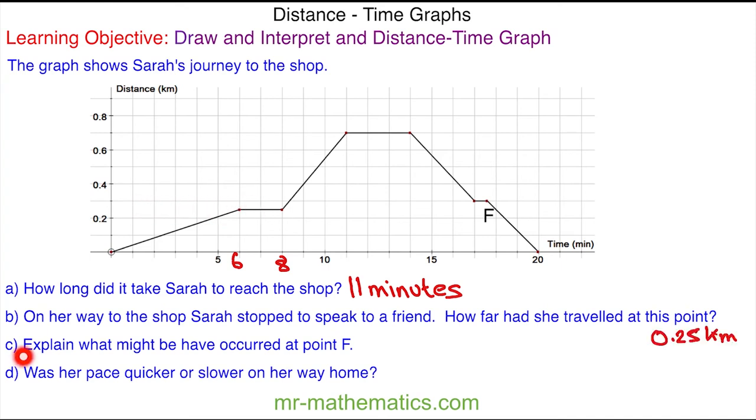For part C, explain what might have occurred at point F. At this point she begins her journey home and then she stops for less than a minute before she continues. You could say at this point she was stopped by some traffic lights.